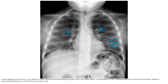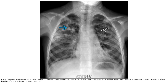Frontal radiograph of the chest in a seven-year-old with cystic fibrosis showing marked peribronchial thickening in the perihilar region — an early finding of cystic fibrosis that is indistinguishable from common viral bronchiolitis. Additional peribronchial thickening is seen in the left base. A frontal view of the chest in a seven-year-old girl with cystic fibrosis showing tubular and nodular density in the right upper lobe; note the bronchiectasis.